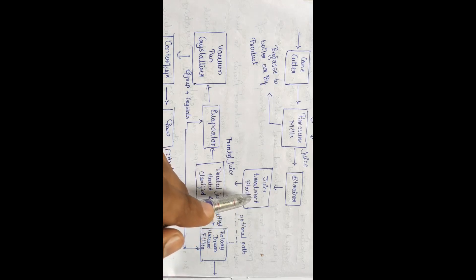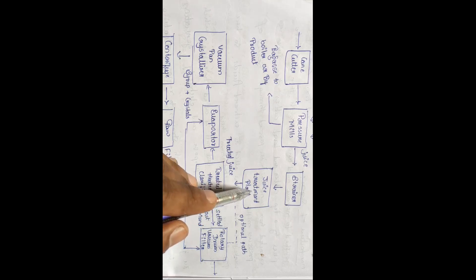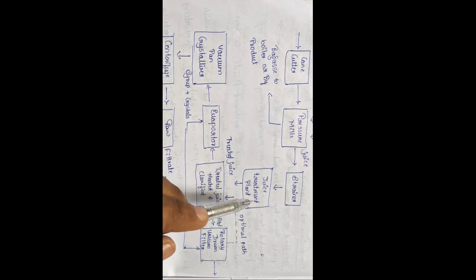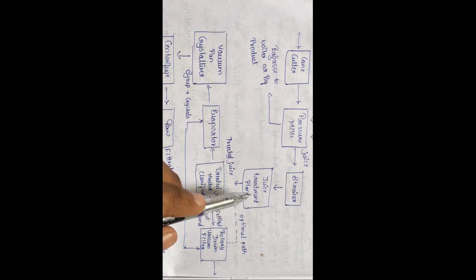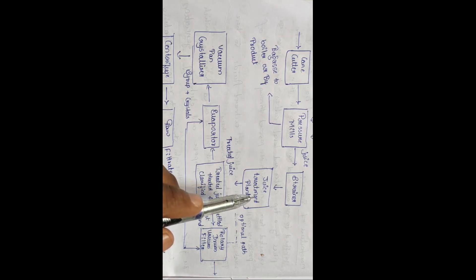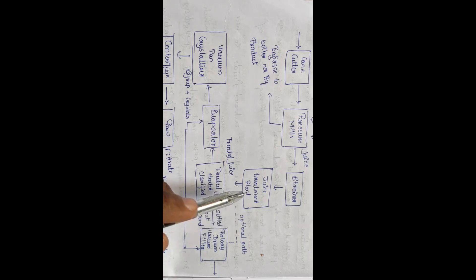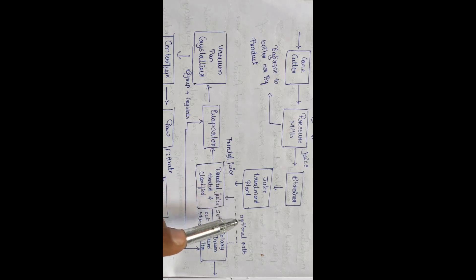In the treatment plant, some chemicals are added. We treat with calcium sulfate, lime, and calcium phosphate for purification purposes. We also add some amount of sulfur dioxide for bleaching purposes. So three chemicals are used: lime, calcium phosphate for purification, and sulfur dioxide for bleaching.